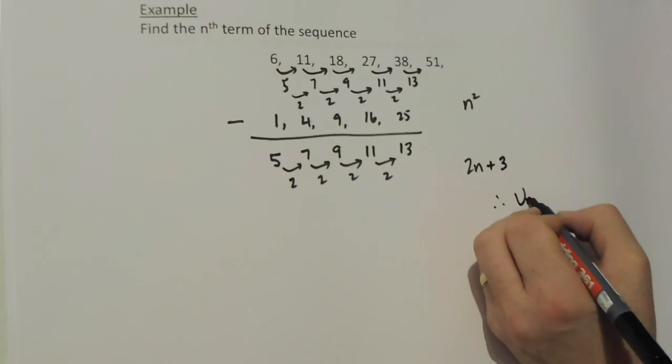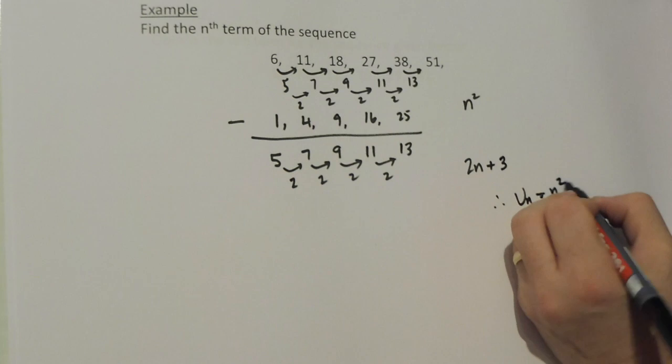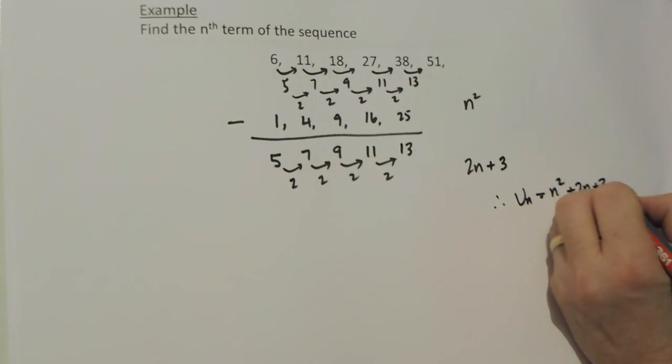So therefore, the nth term is n squared, add 2n, add 3.